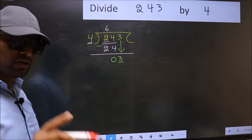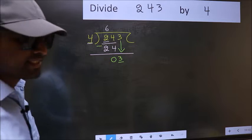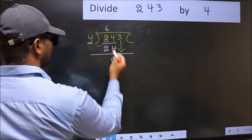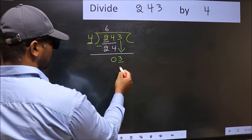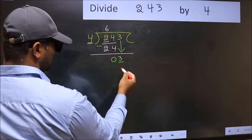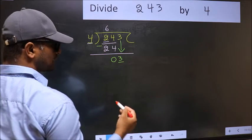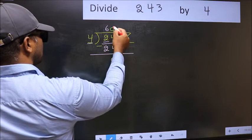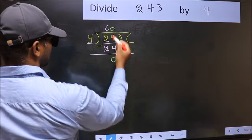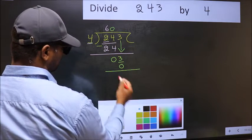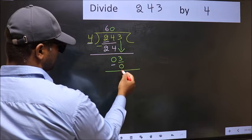Instead, what you should think of doing is, what number should we write here? If I write 1 here, I will get 4. But 4 is larger than 3. So what we should do is we should take 0. So 4 times 0, 0. Now you should subtract. 3 minus 0, 3.